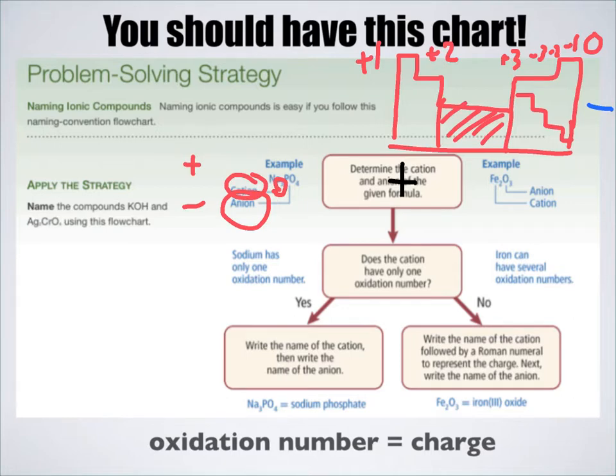Once you know all of this information, you can write down the name of the compound and even the formula. Following this flowchart, it asks about the cation. Does the cation only have one oxidation number? Oxidation number means charge. The only ones that don't have a single charge are these guys right here, the transition metals. So if there's a transition metal present, you have to use a Roman numeral in parentheses to establish what that compound is, whether we're talking about iron two or iron three.